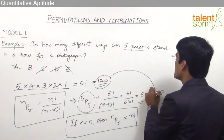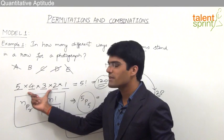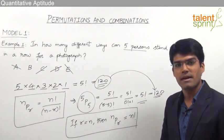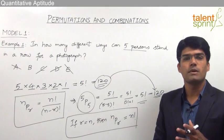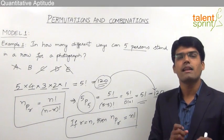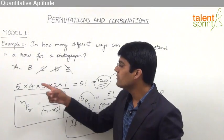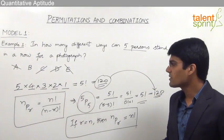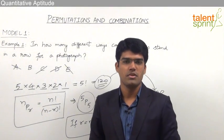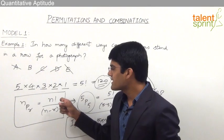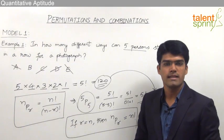So whether we use the formula nPr or the principle of multiplication, we get the same answer of 120. This way of solving is important because in certain questions from permutations, conditions are given and those conditional questions cannot be solved directly with the formula — there we need to use this approach. Either we can use nPr, that is n factorial by n minus r factorial, or we can use the principle of multiplication to get the required answer.